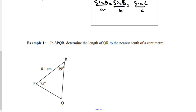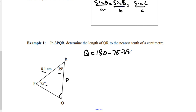Here I want to determine the length of QR, or little p. I want to solve for this side length. I've been given two angles and a side. This will work — I just need to find angle Q. I know that Q equals 180 minus 75 minus 39, because all angles of a triangle add up to 180. Working that out: 180 minus 75 minus 39 equals 66 degrees. Now I have an angle and its opposite side, so I can use Sine Law to find p.